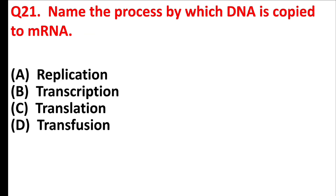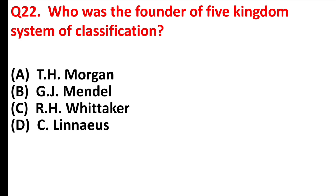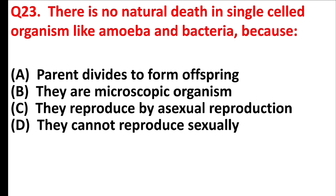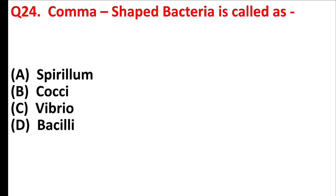Name the process by which DNA is copied to mRNA. Answer is Option B: Transcription. Who was the founder of the Five Kingdom system of classification? Answer is Option C: R.H. Whittaker. There is no natural death in single-celled organisms like amoeba and bacteria because Answer is Option A: the parent divides to form offspring. Comma-shaped bacteria is called Answer is Option C: Vibrio.